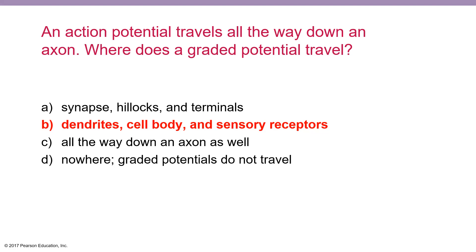It is not going to lead to an action potential — or it could, if it's strong enough. But typically, if it's not strong enough, it will dissipate by the time it gets to the axon hillock. So it does travel — I don't want you to think that they don't travel. It's just that they dissipate as they do so.